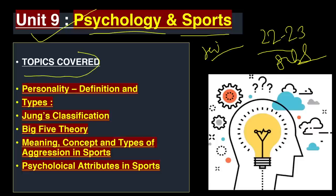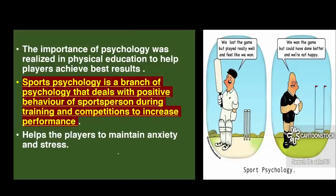The topics of this chapter are: Personality — its definition and types, that is Jung classification and Big 5 theory. Also, meaning, concept and types of aggression in sports, and psychological attributes in sports.